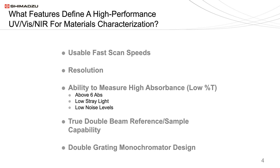What features define a high performance instrument for the materials characterization market? First, usable fast scan speeds — most of these applications are quality control where sample throughput is an issue. Second, resolution — many of these samples are solid and have narrow band peaks that need to be resolved. Third, the ability to measure high absorbance or low percent T, usually above six absorbance units, which relies on very low stray light and low noise levels. Fourth, true double beam capability so that you can reference beam attenuate. And fifth, double grating, which is not always required, as we'll see.